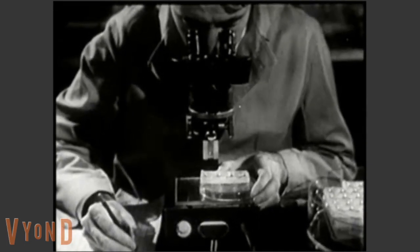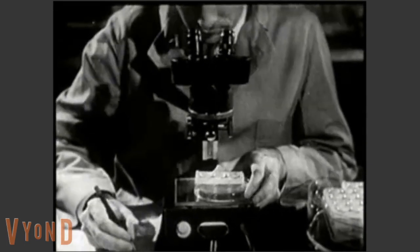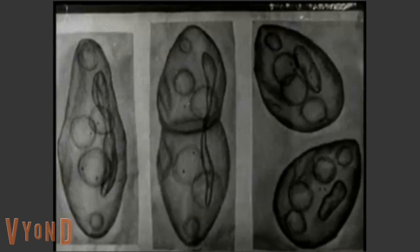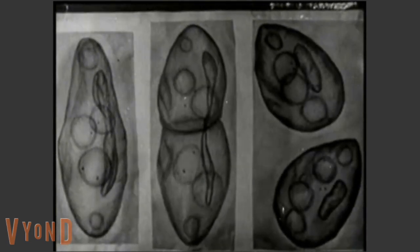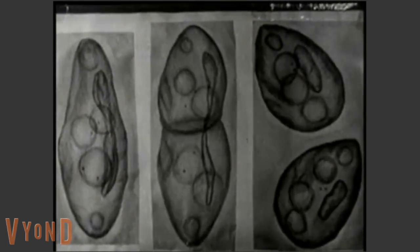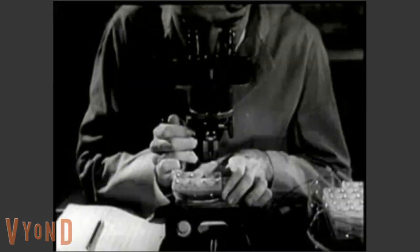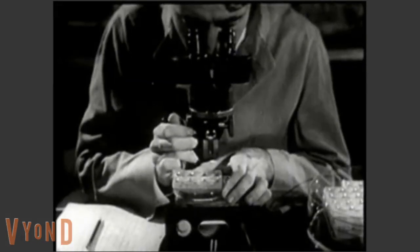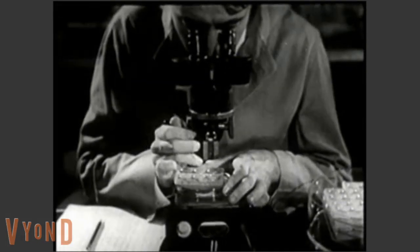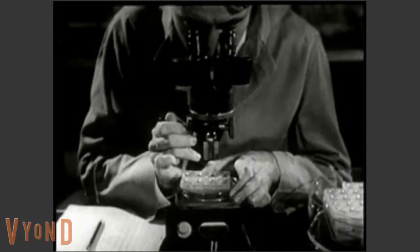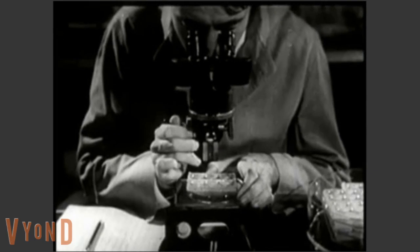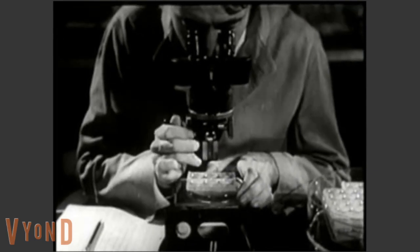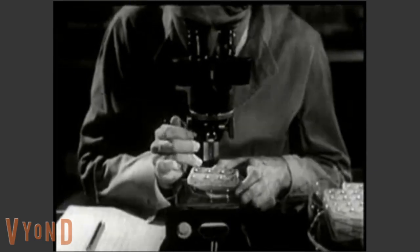The geneticist finds that the irradiated cells do reproduce faster than cells that have not been irradiated. Future generations of paramecia will also be studied to see if the effects of radiation are transmitted from one generation to the next.